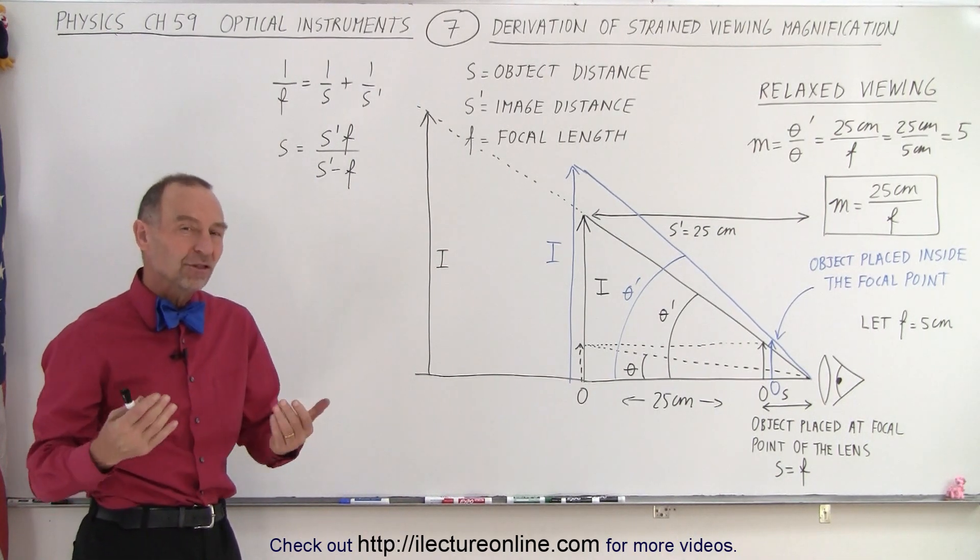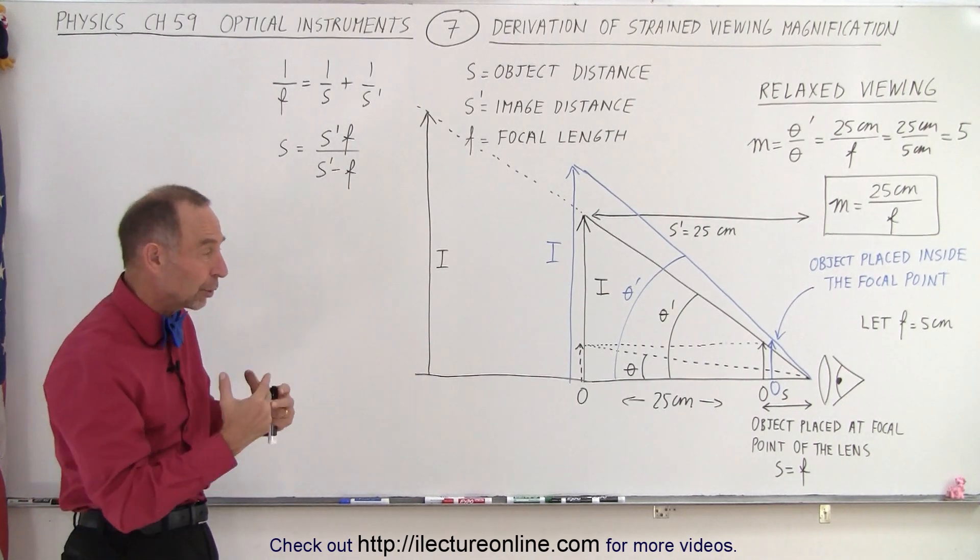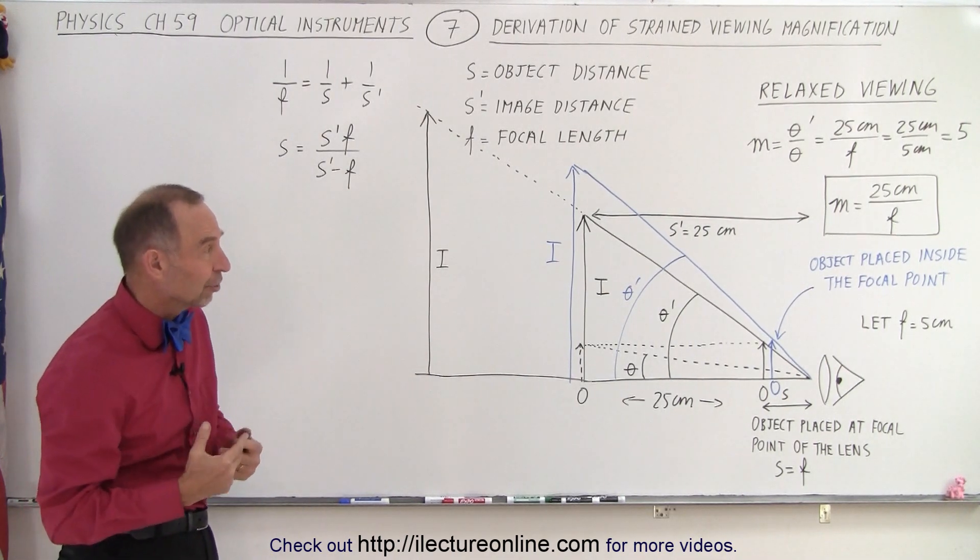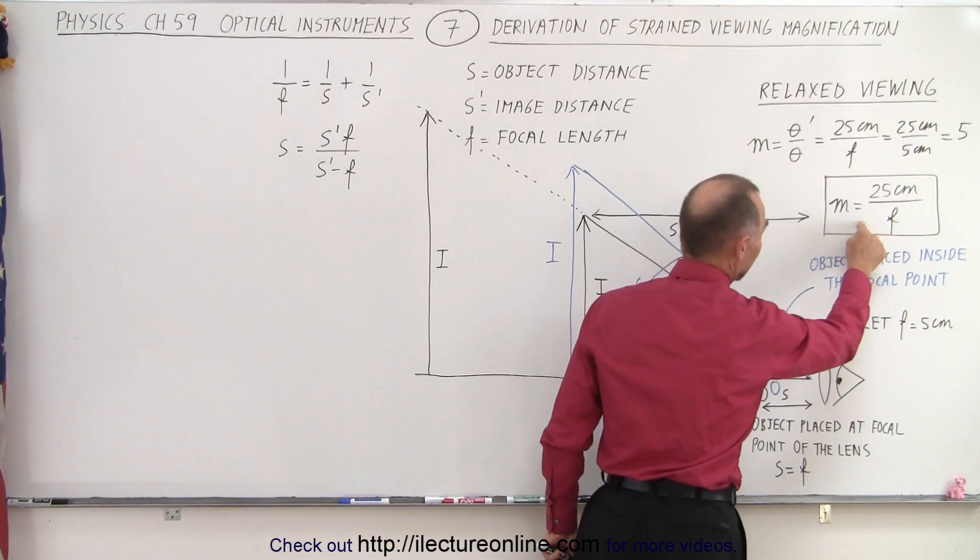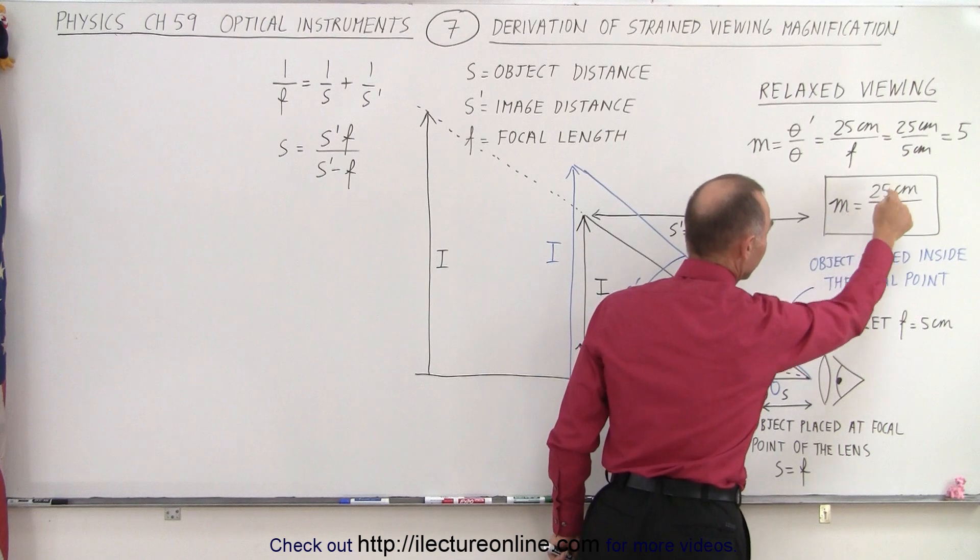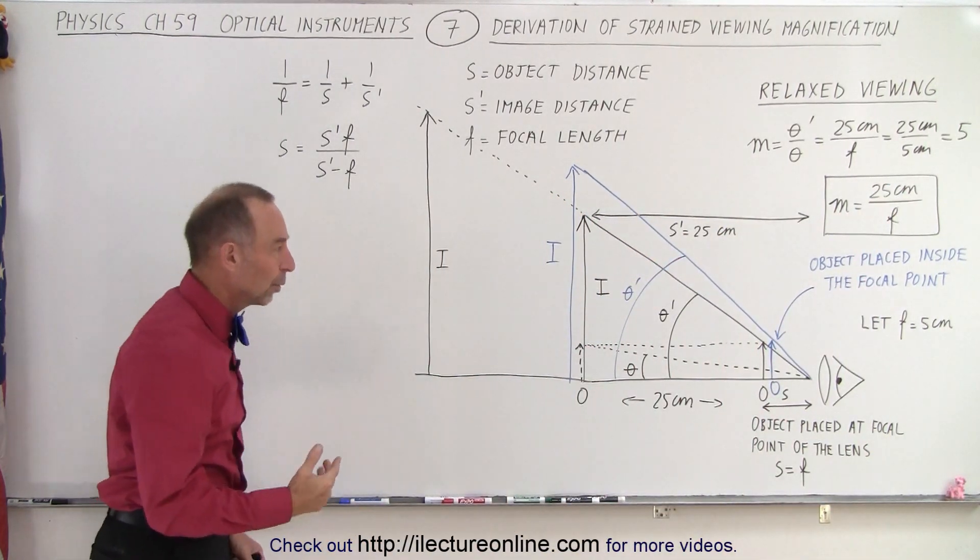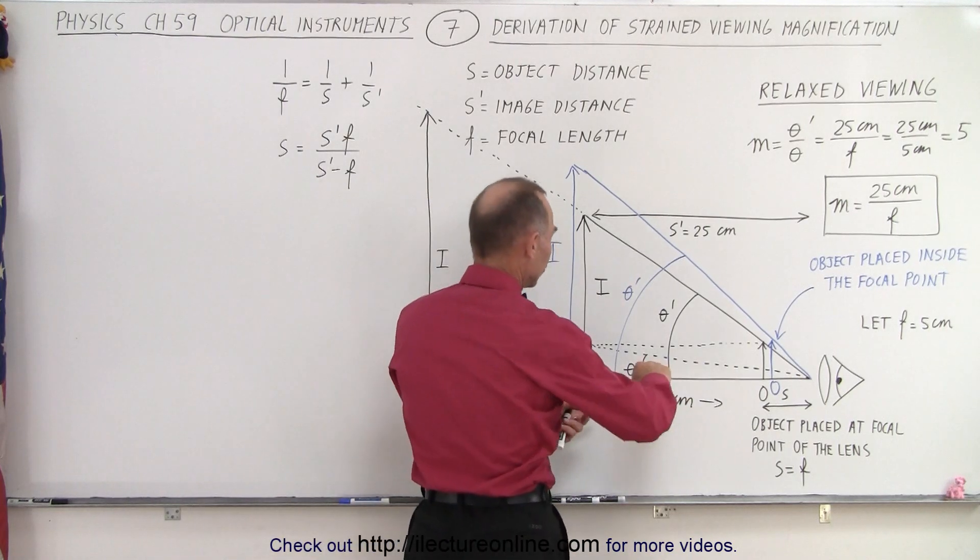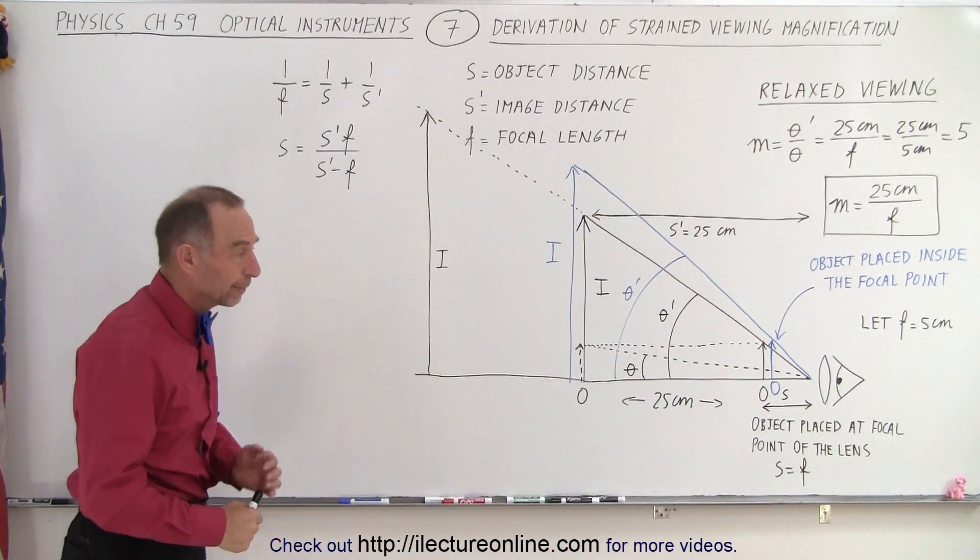The question is, is there a general equation we can find that tells us what the magnification will be when we look with strained vision rather than relaxed viewing? We saw relaxed viewing that the magnification was simply 25 centimeters divided by the focal length of the lens, which was derived by taking the ratio of the new angle to the old angle. That ratio ended up being 25 centimeters over the focal length.